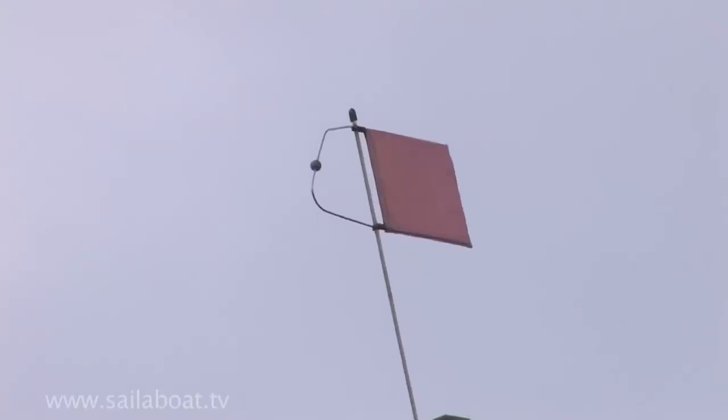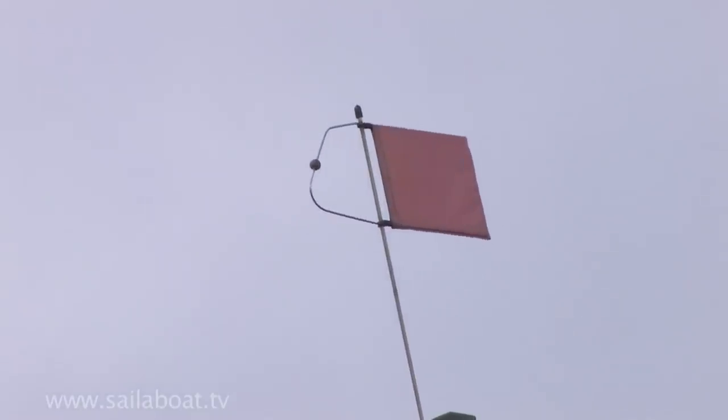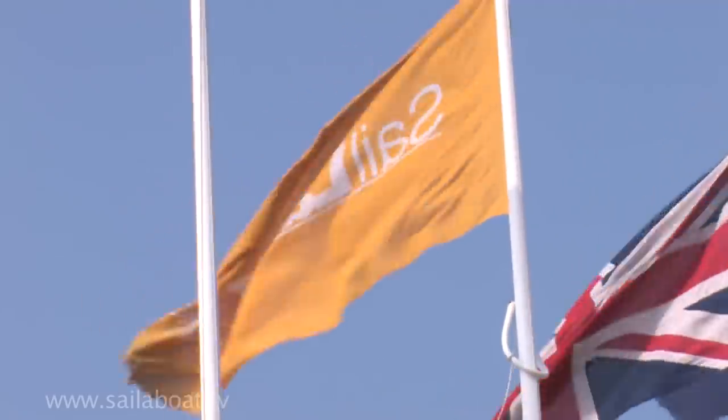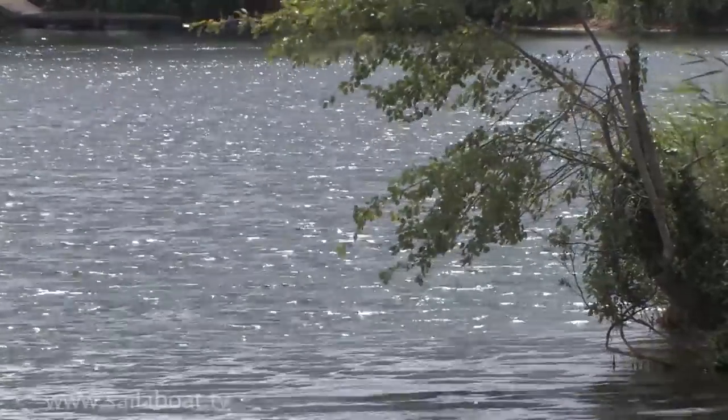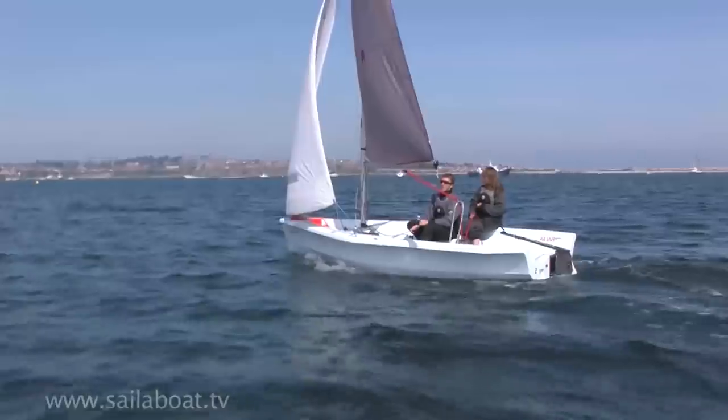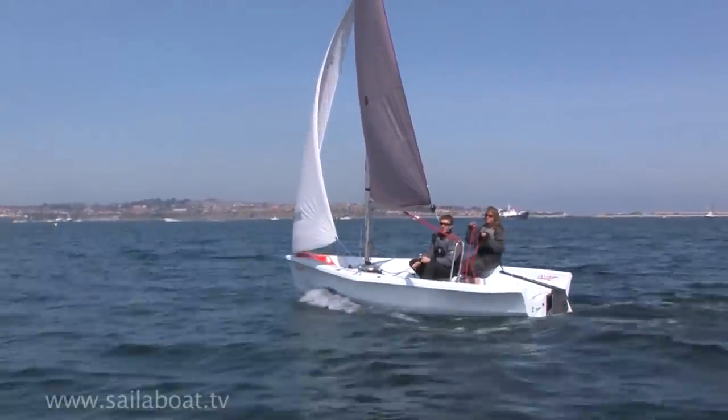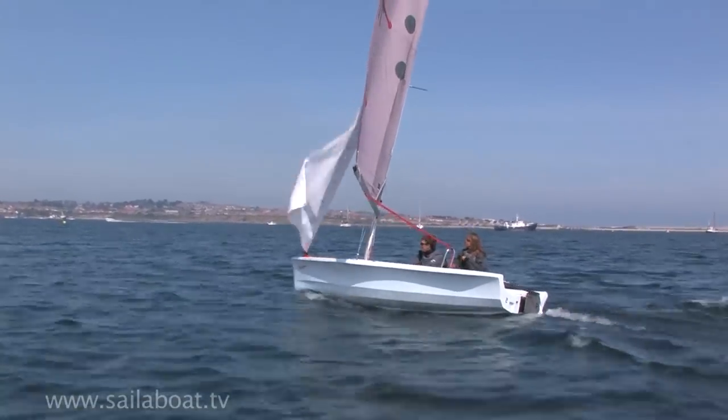To help you, you can use a masthead burgee which will point towards the wind. Flags ashore are another indicator. Ripples on the water also blow from where the wind is coming from. A flapping sail works like a flag and will lie in the same direction that the wind is blowing.